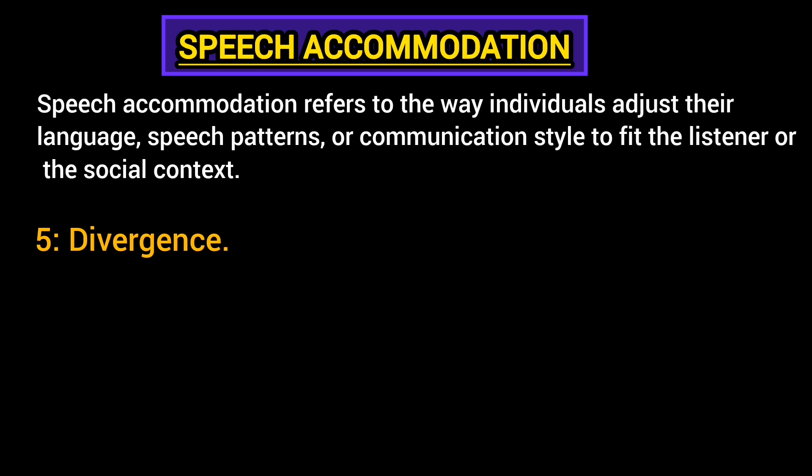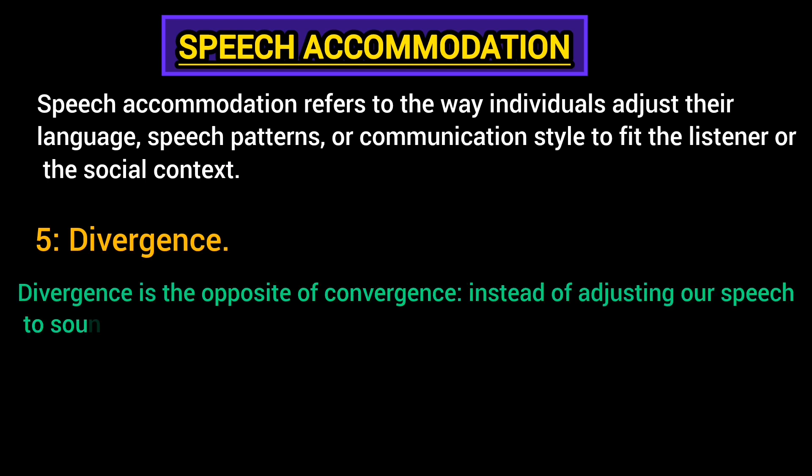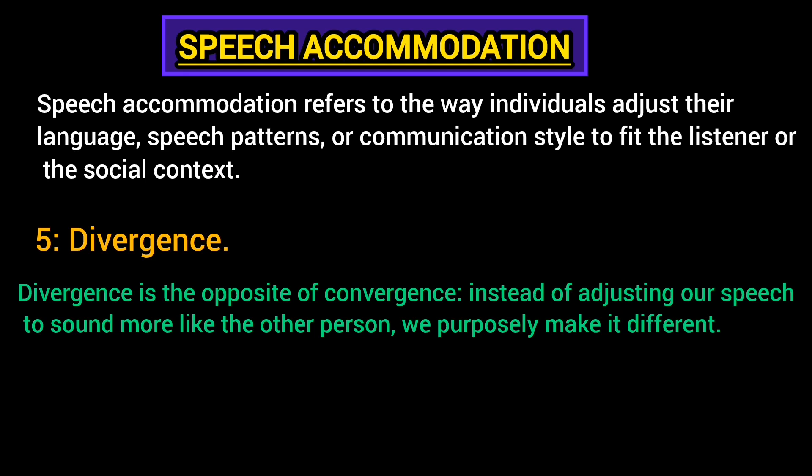Divergence is another main characteristic in speech accommodation. Divergence is the opposite of convergence — instead of adjusting our speech to sound more like the other person, we purposely make it different. This can be a way to highlight our own identity or set boundaries in conversation. In divergence, we signal that we want to keep some distance from the other person, socially or emotionally. For instance, a manager might use formal language with employees to maintain authority, while the employees use more casual language with each other.